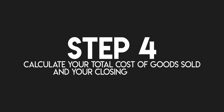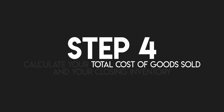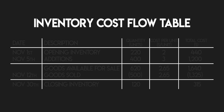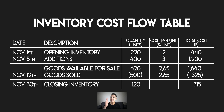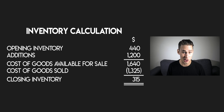Step 4: calculate your total cost of goods sold and your closing inventory. Your total cost of goods sold for the month can be calculated by adding up your cost of goods sold for every sale that you've made. In this problem there was only one sale, so your total cost of goods sold for November is $1,325. And you can find the total cost of your closing inventory in the bottom right corner: $315. This inventory cost flow table mirrors the inventory calculation that we had at the start of the video.